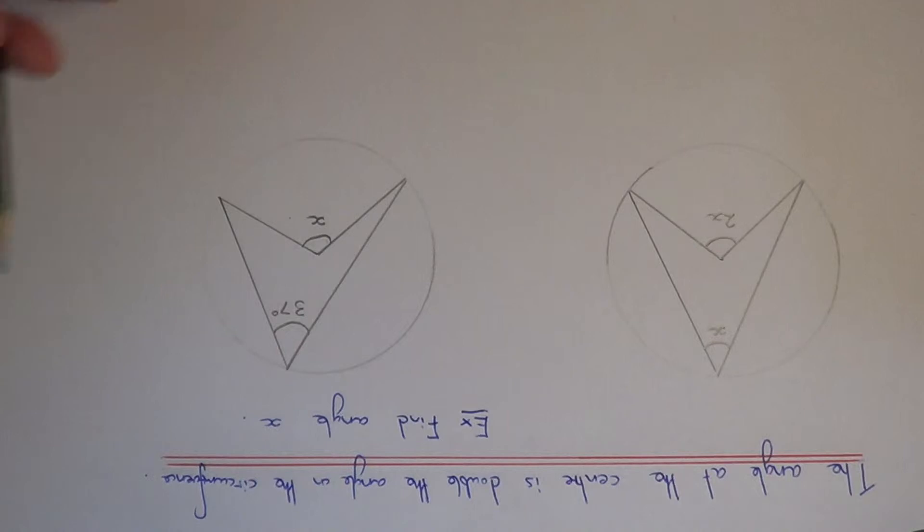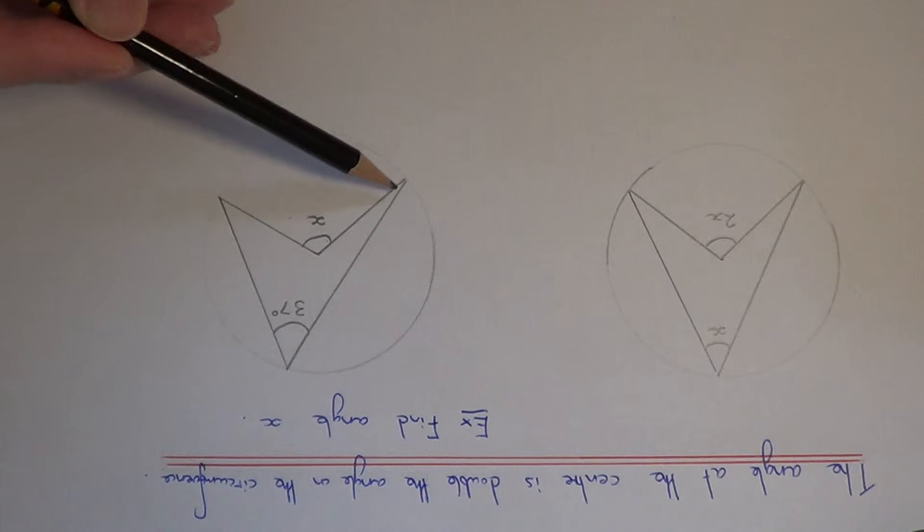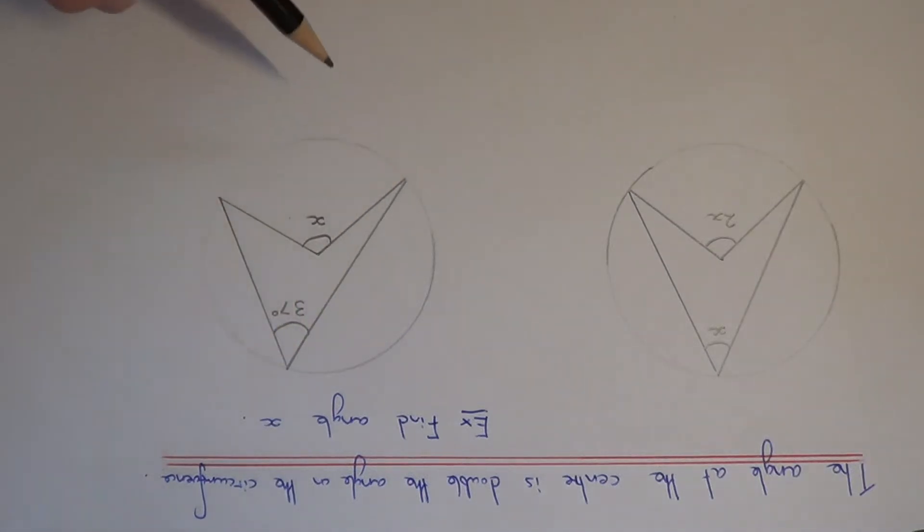We need to work out angle x, so as you can see, angle x is at the centre of the circle, and we are given the angle on the outside.